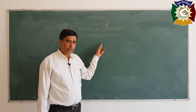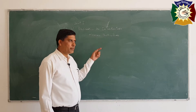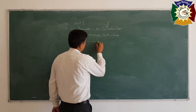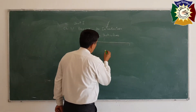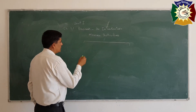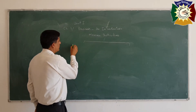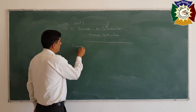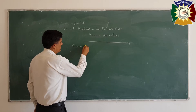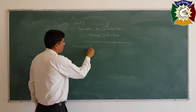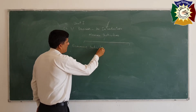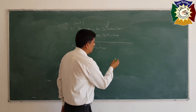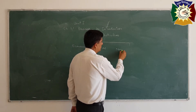Human Activities can be divided into two categories: first, Economic Activities, and second, Non-Economic Activities.